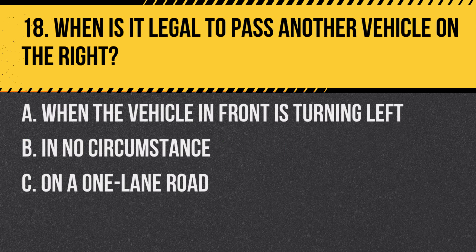Question 18: When is it legal to pass another vehicle on the right? A. When the vehicle in front is turning left. B. In no circumstance. C. On a one-lane road. Answer: A. When the vehicle in front is turning left. It's legal to pass on the right if the vehicle ahead is making a left turn and there is room to pass safely.